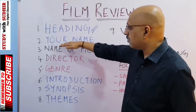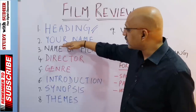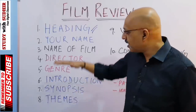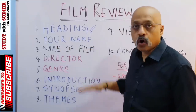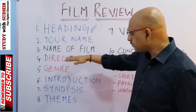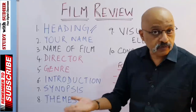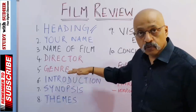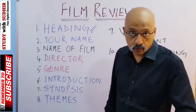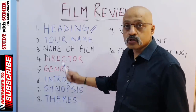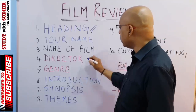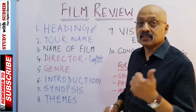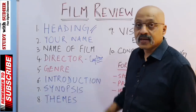The second point is your name. This can either come right on top — for example, 'by T.S. Sudhir' — or it can come at the end of the review saying 'reviewed by so and so.' This is optional; you can write it at the beginning or at the end. Third, of course, is the name of the film — whichever film you are reviewing. Ensure you do not make any spelling mistakes. Fourth is the director of the movie. Please ensure you know who directed it, because the director is really the captain of the film ship — the most important person.